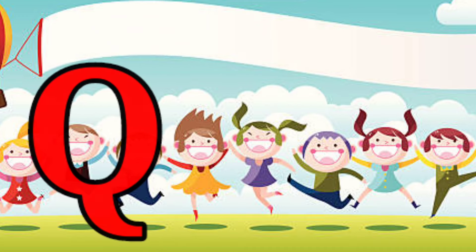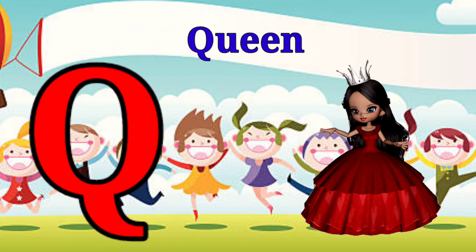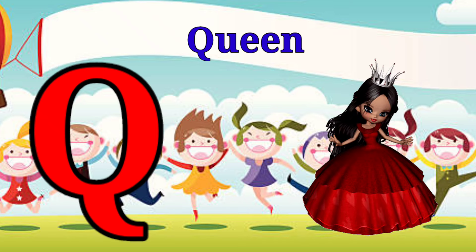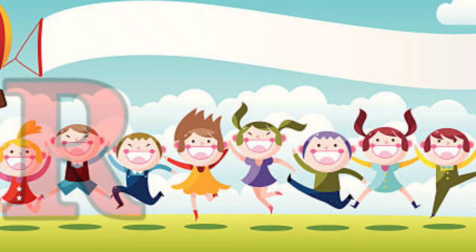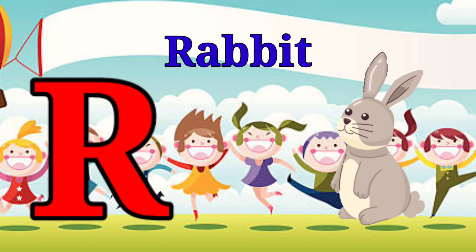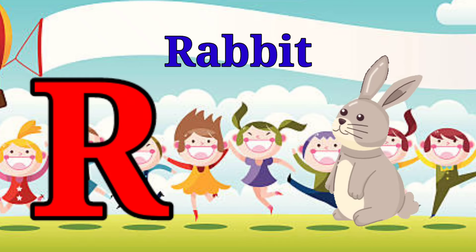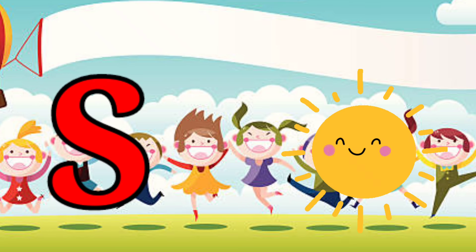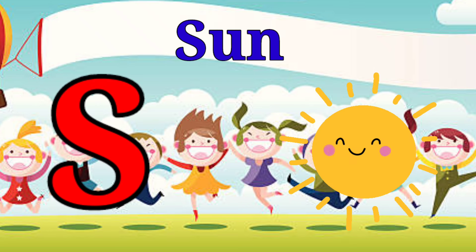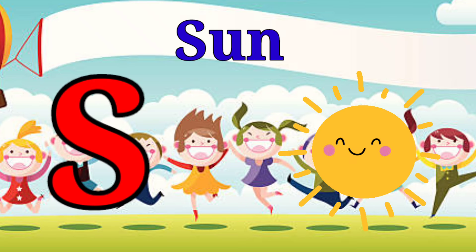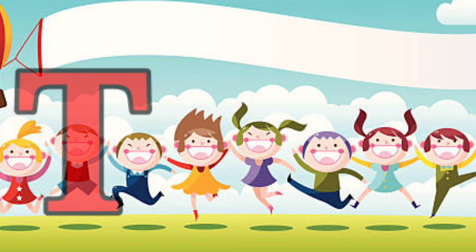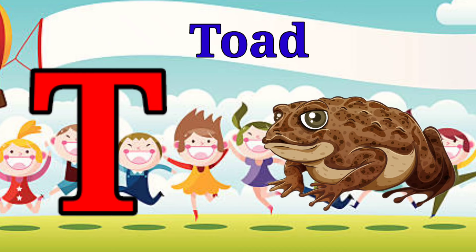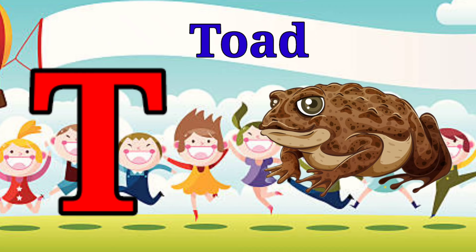Q is for queen, q-q-queen. R is for rabbit, r-r-rabbit. S is for sun, s-s-sun. T is for toad, t-t-toad.